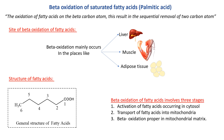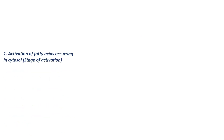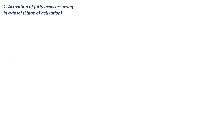The beta oxidation of fatty acids involves three stages: first, activation of fatty acids occurring in the cytosol; second, transport of fatty acids into the mitochondria; and third, beta oxidation proper in the mitochondrial matrix. We will now look at the first stage — activation of fatty acids in the cytosol.